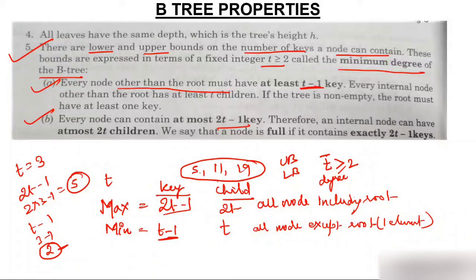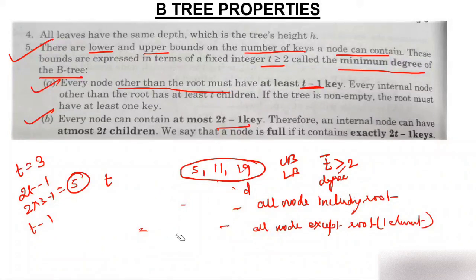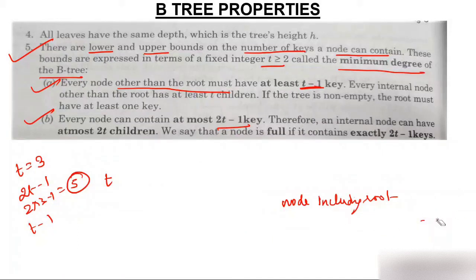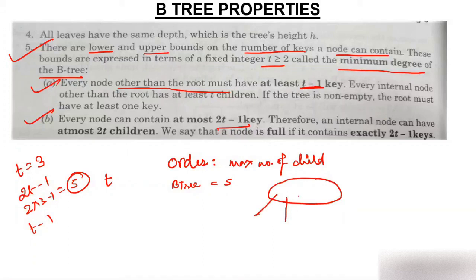The fifth property can also be expressed using order instead of degree. Order is defined as the maximum number of children a node can have. For example, if a B-tree has order 5, a node can have at most 5 children, and therefore at most 4 keys. If a question says design a tree of order 7, a node can have at most 6 elements.